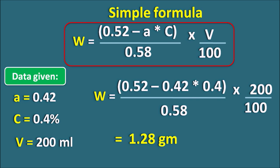If we had applied the incomplete simple formula (0.52 − A) / 0.58, we would not get the correct answer. To get the correct answer the formula must include the concentration C and the volume V of the drug solution. In this way we can easily calculate the amount of sodium chloride required to adjust isotonicity by the cryoscopic method for any data given — whether the volume is 100 ml, 200 ml, or 500 ml, and the concentration is 1%, 0.5%, or any value.